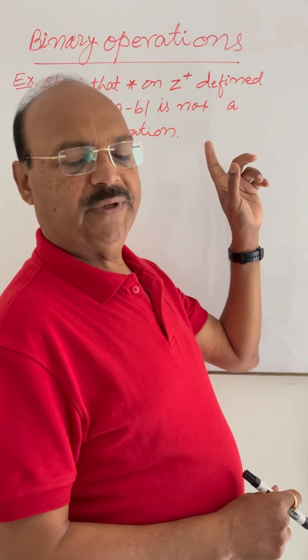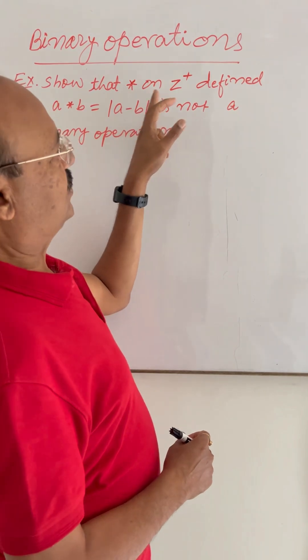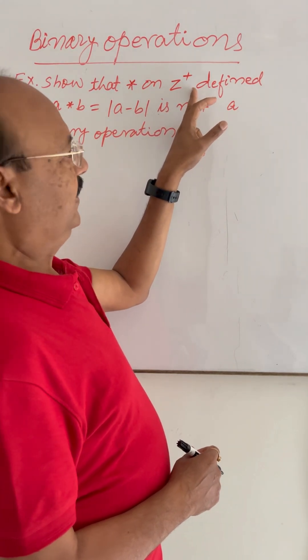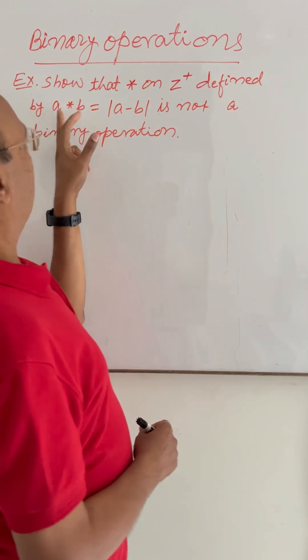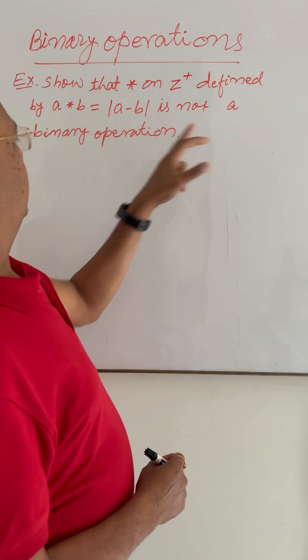This question has been taken from the topic binary operations. Here the question is to show that this operation on Z plus, where Z plus is positive integers, defined by a operation b equals mod of a minus b, is not a binary operation.